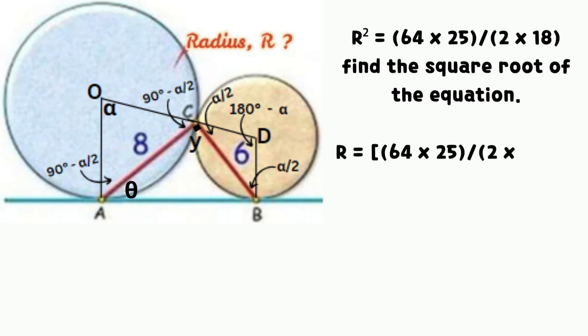For the equation of the square of the radius R, find the square root of the equation to have that R equals to 20 divided by 3. Therefore, the radius of the larger circle R equals to 20 divided by 3 units.